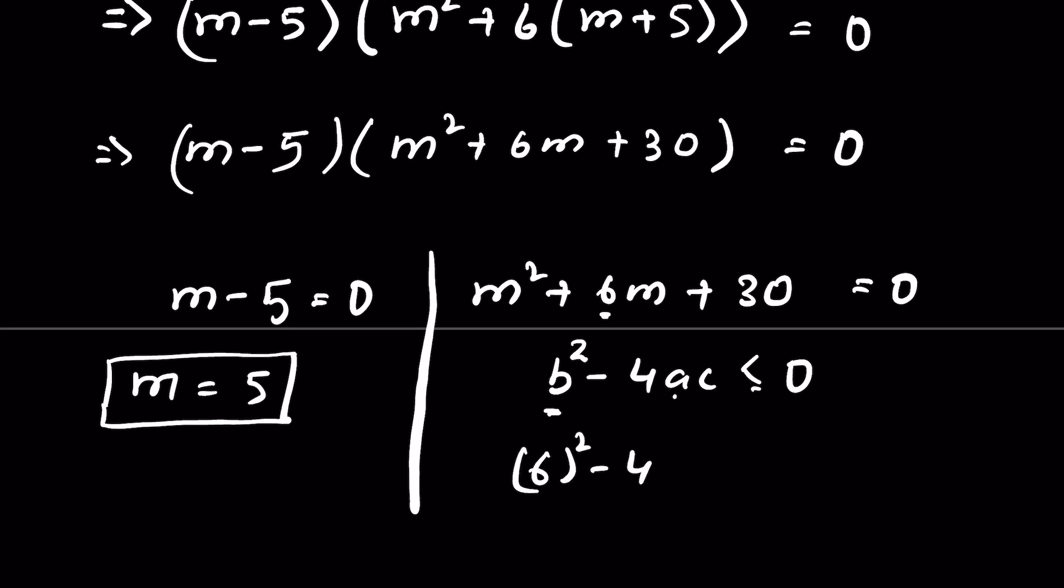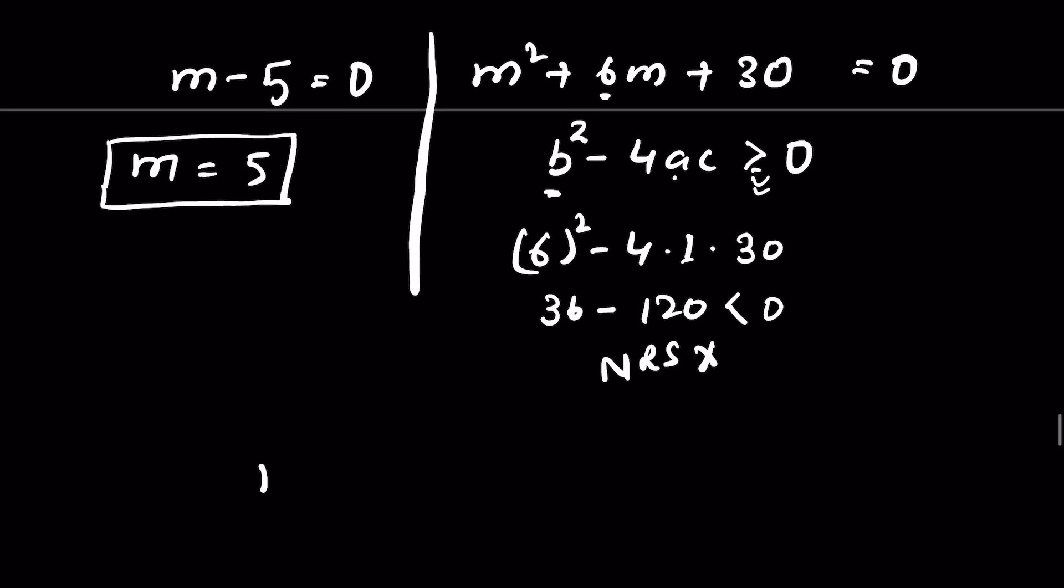a is 1, the coefficient of m², and c is 30. So 36 - 120 is less than 0. Since we need it to be greater than or equal to 0, there is no real solution from this case.